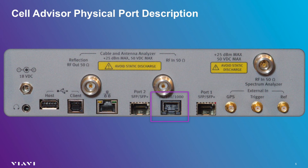The network connection port located between the SFP ports is not used at this time. A GPS receiver port is located immediately to the right of the SFP ports. Connecting a GPS antenna to this port allows the instrument to determine location and stabilize the unit's internal oscillator. Once the antenna is connected, it may take a few minutes for the GPS receiver to locate satellite signals and lock onto those signals.